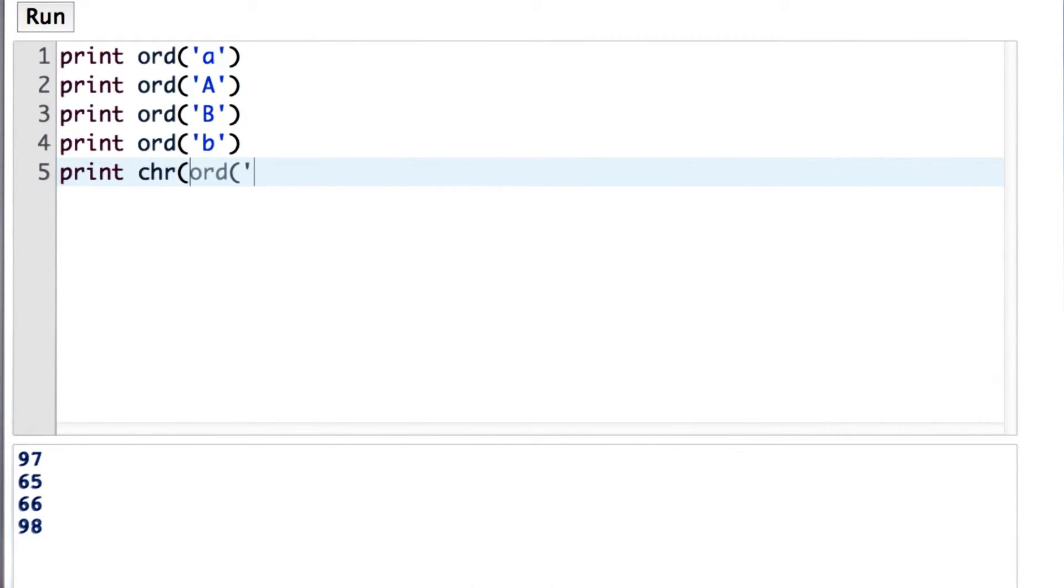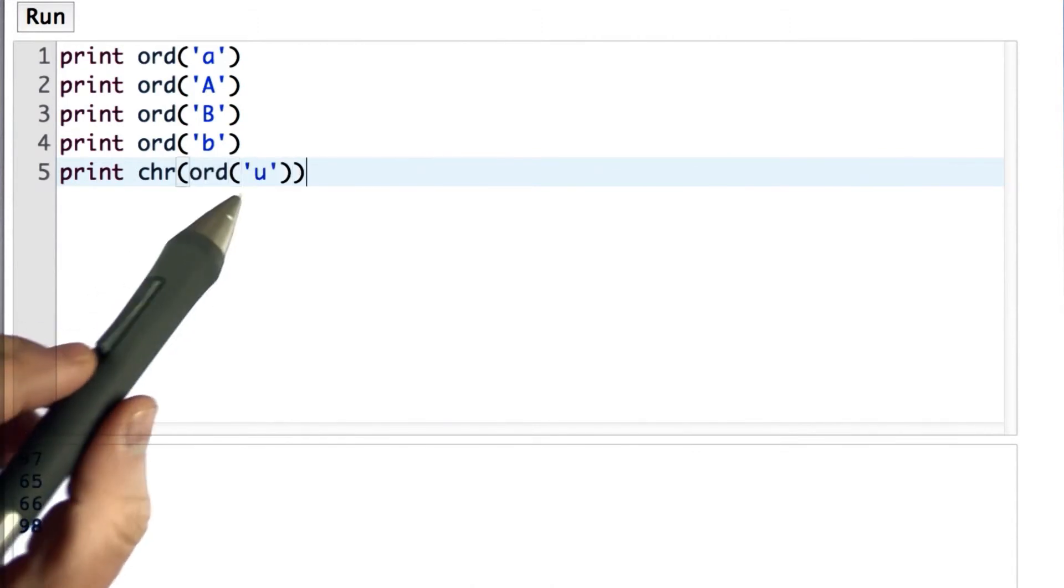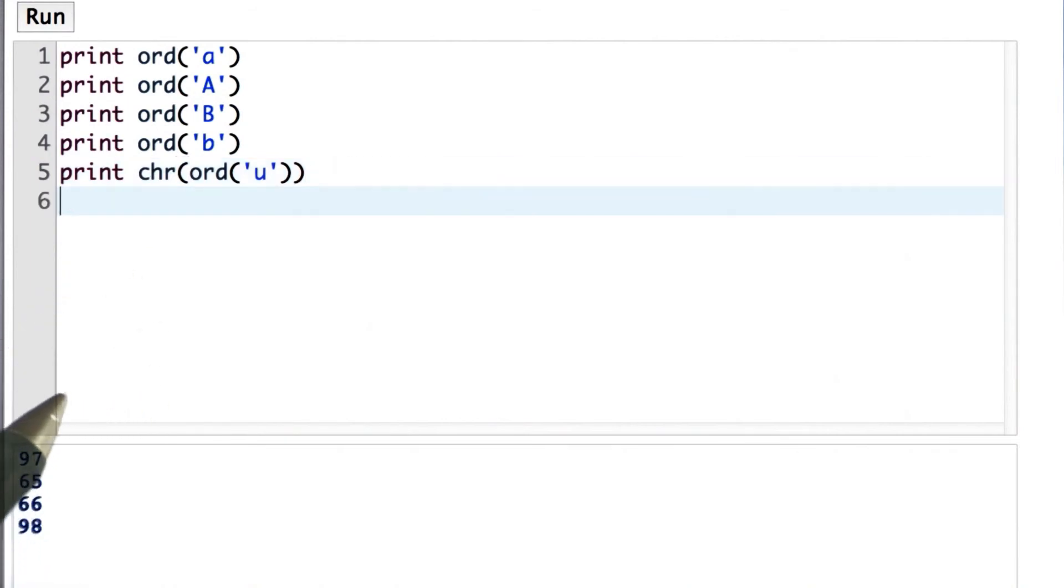And just to show that they are inverses, if we do ord of 'U' and then chr of that, what we get back is the single letter string 'U' that we started with.